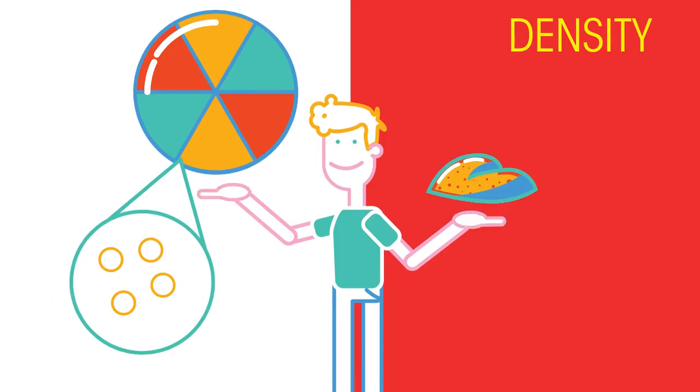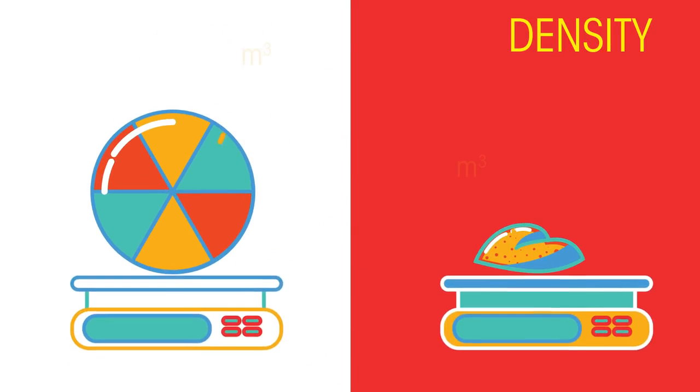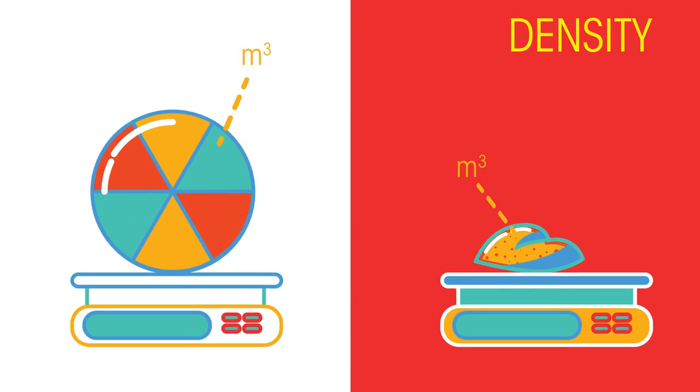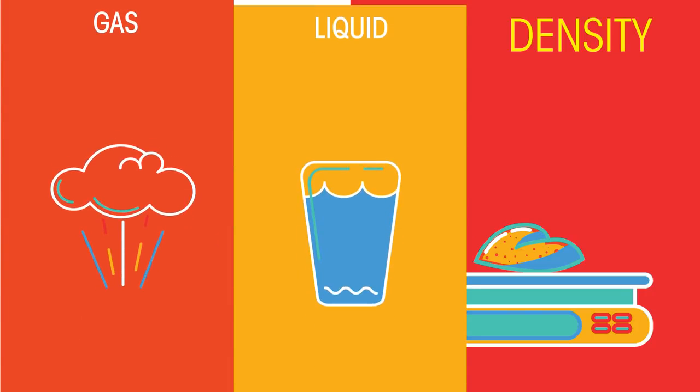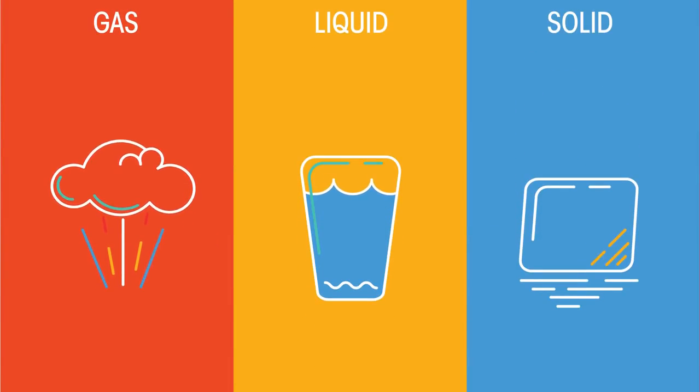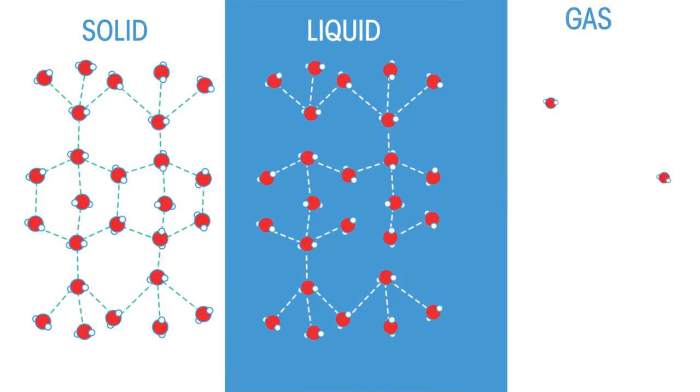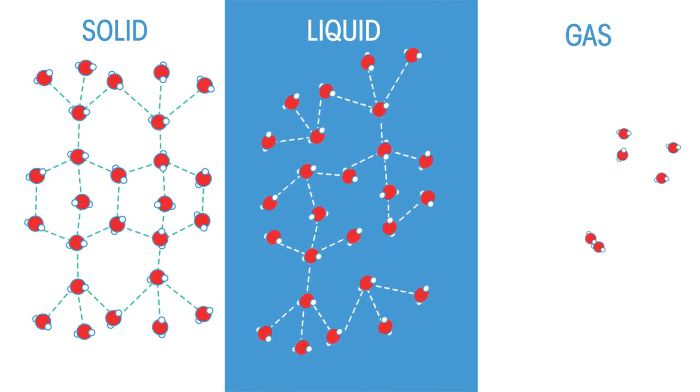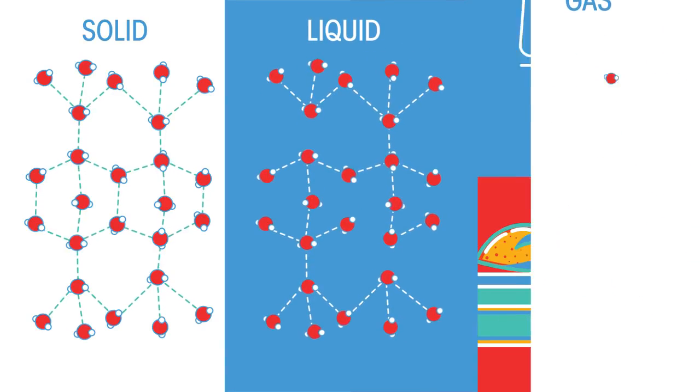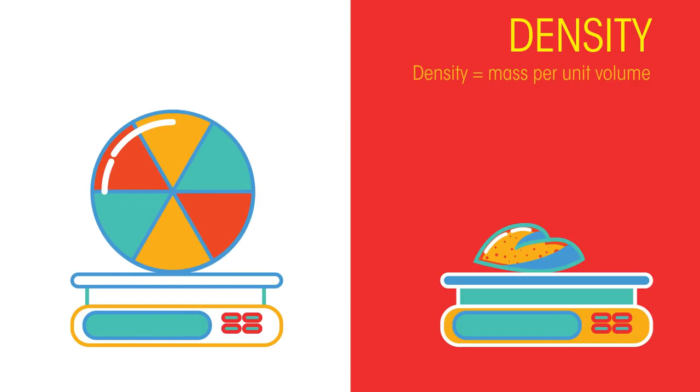In this video we are going to look at what density is, how it is measured and the differences in density between different states of matter. Informally, density is a measure of how packed a material is with mass. Density is defined as the mass of an object per its unit volume.